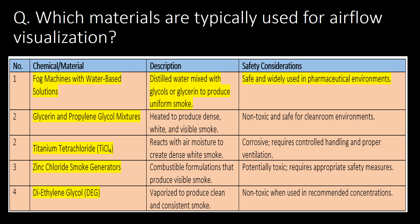Which materials are typically used for airflow visualization? First, fog machines with water-based solutions — distilled water mixed with glycols or glycerin — to produce uniform smoke. This method is safe and widely used in pharmaceutical environments. Other materials include glycerin and propylene glycol mixtures, titanium tetrachloride, zinc chloride smoke generators, and diethylene glycol.